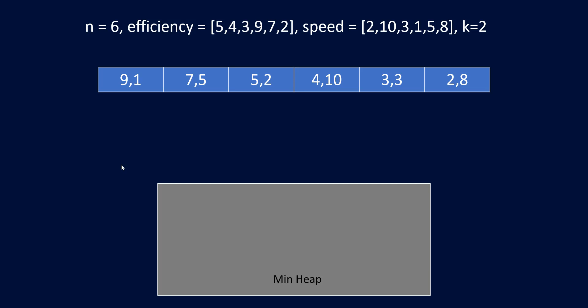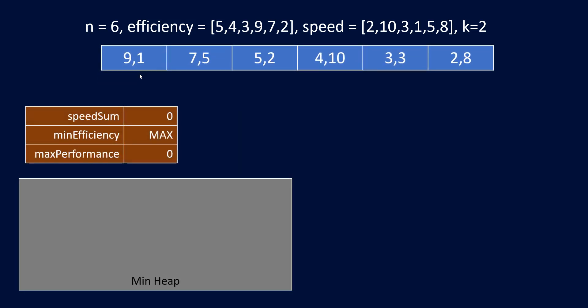We know we need a heap. What do we store in it? Efficiency is already taken care of by sorting, so we store speed in the heap. We use a min-heap of size k. We also take a few long variables: speed sum (the running sum of speeds), and max performance (to hold our result). The minimum efficiency is simply the efficiency of the current engineer we are iterating on.